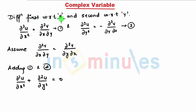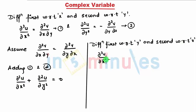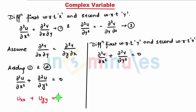Similarly, as I differentiated the first equation with respect to x and the second with respect to y, if you differentiate vice versa — that means the first with respect to y and the second with respect to x — then I directly get ∂²v/∂x² + ∂²v/∂y² = 0.